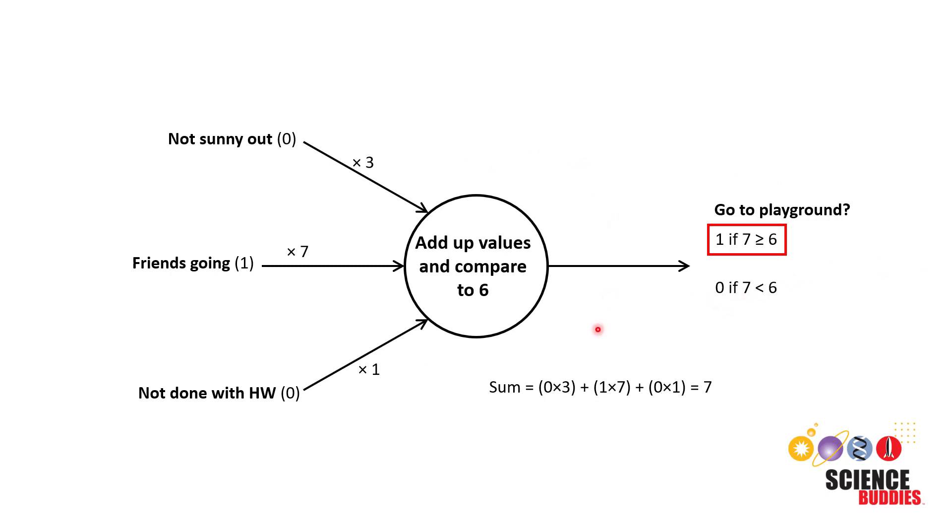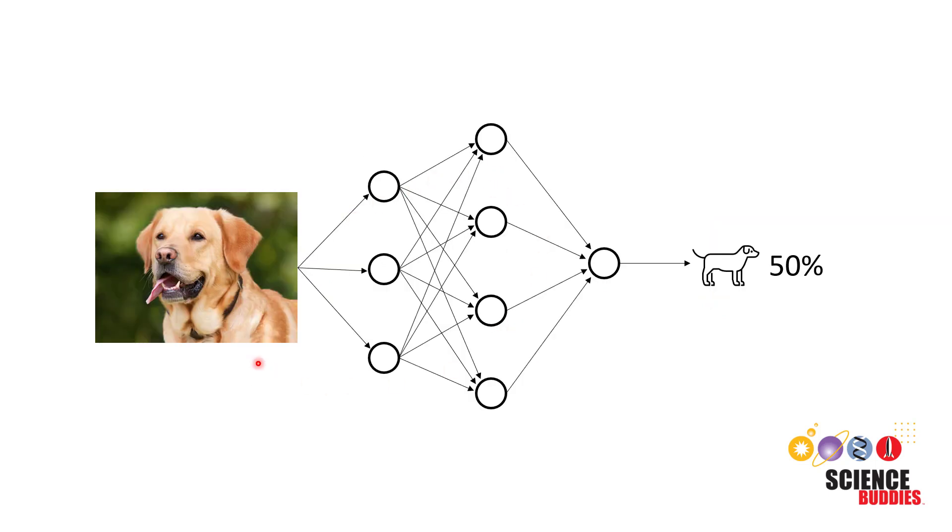The difference between our very simple example here and a neural network that would be used for something like image recognition is that this network could have hundreds or thousands of neurons and multiple layers of neurons that are connected to each other, each with their own weights and thresholds. So there are way too many parameters in this model for a human to go in and tweak them all one at a time and change them to try and improve the output.